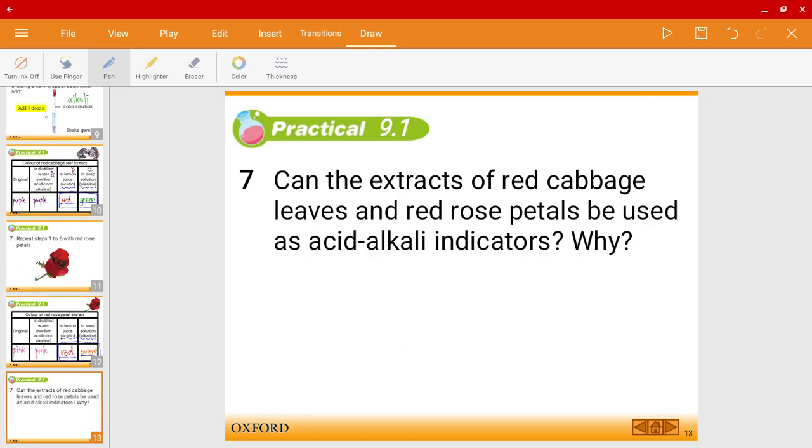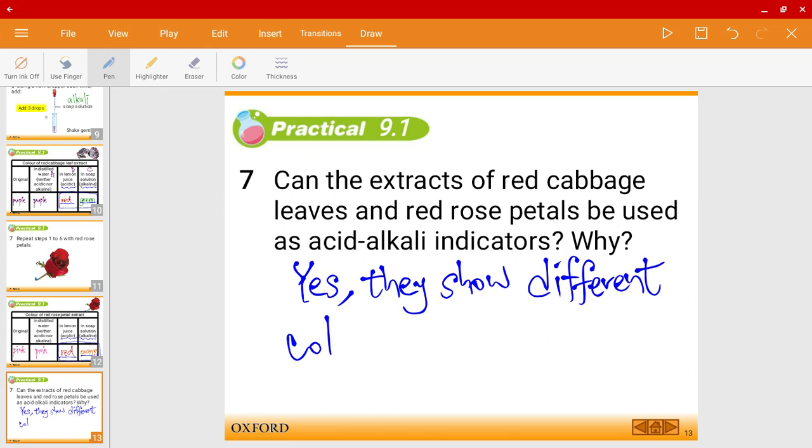So let's answer this question. Can the extracts of red cabbage leaves and red rose petals be used as acid alkaline indicators? If so, why? So, of course, the answer is yes, because they show different colors in acid and alkaline solutions.